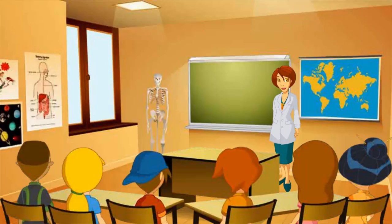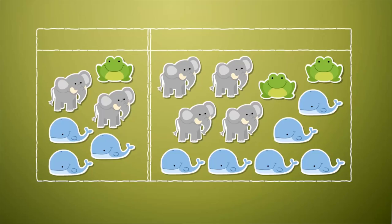Hello, kids. I'd like you to have a look at the blackboard. Please, what can you see in each column? That there are less animals in the first column than in the second. Alright, let's count.